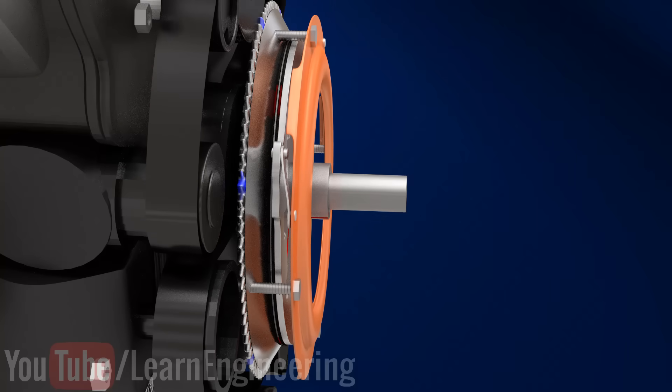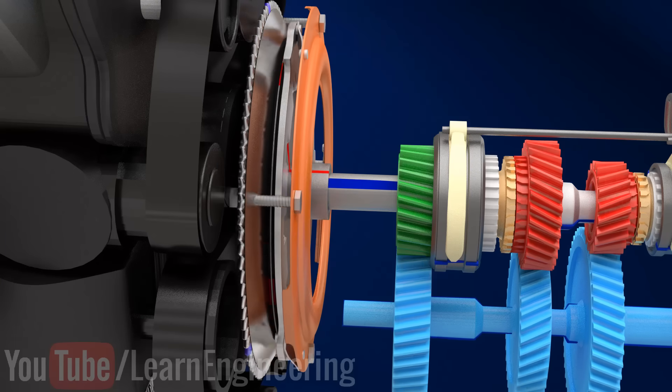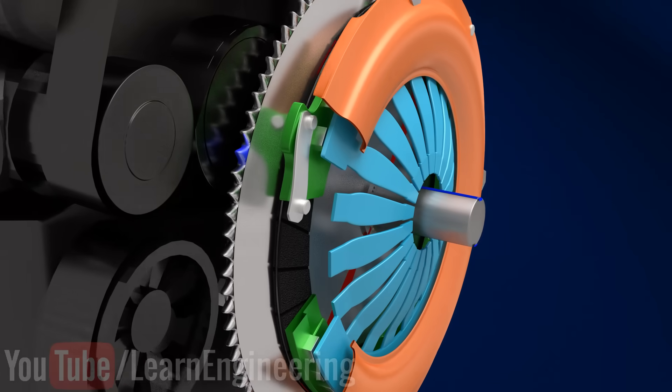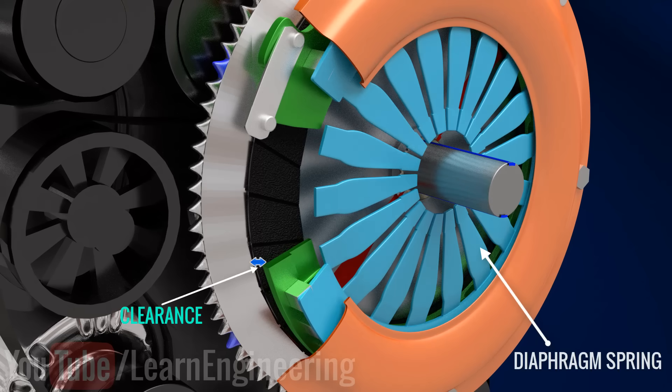As long as you don't press the clutch pedal, the spring mechanism will be supplying a strong external force. When you press the clutch pedal down completely, the pressure plate will move away from the disc with the help of a diaphragm spring. Thus, the transmission will be separated from the flywheel.